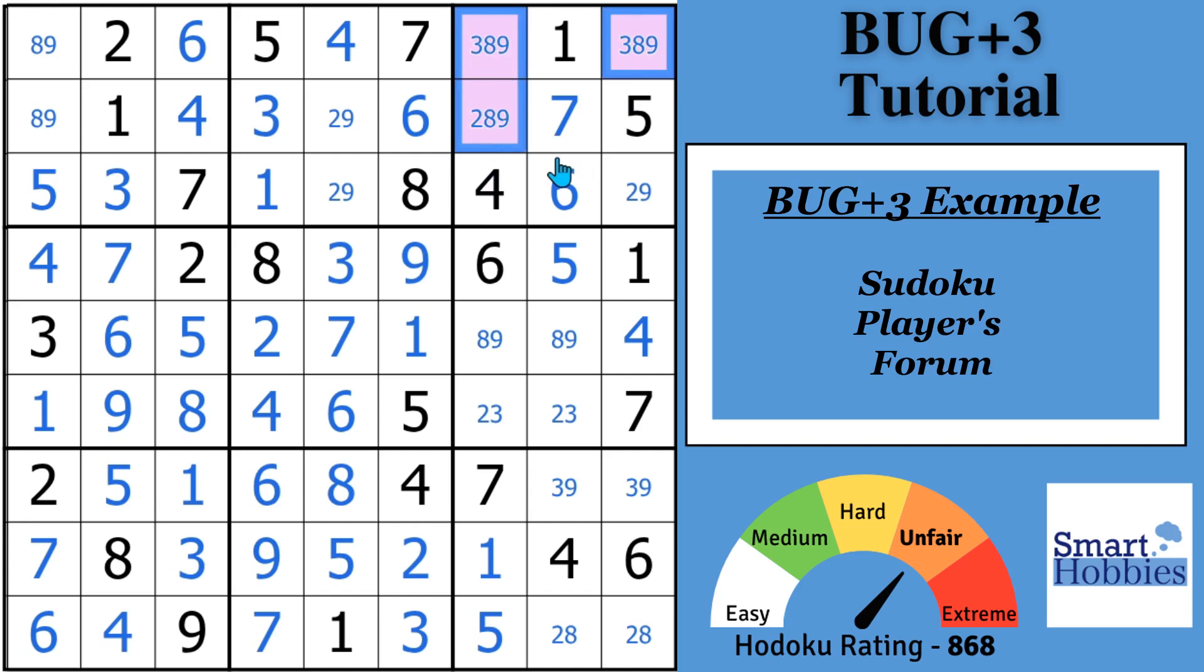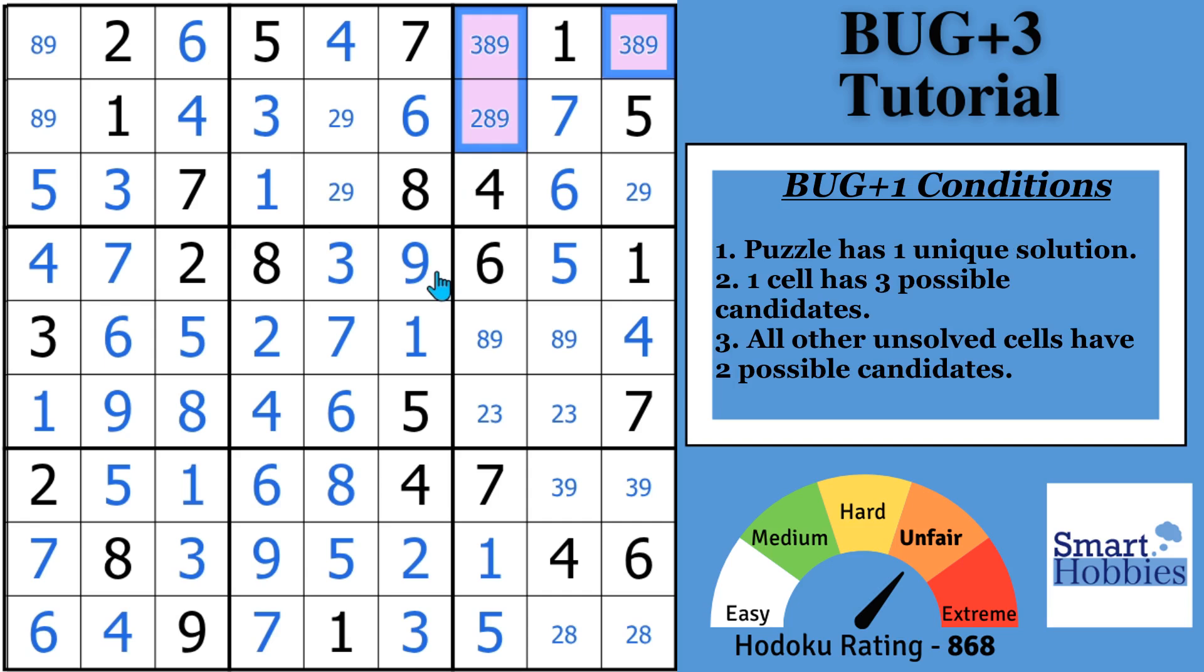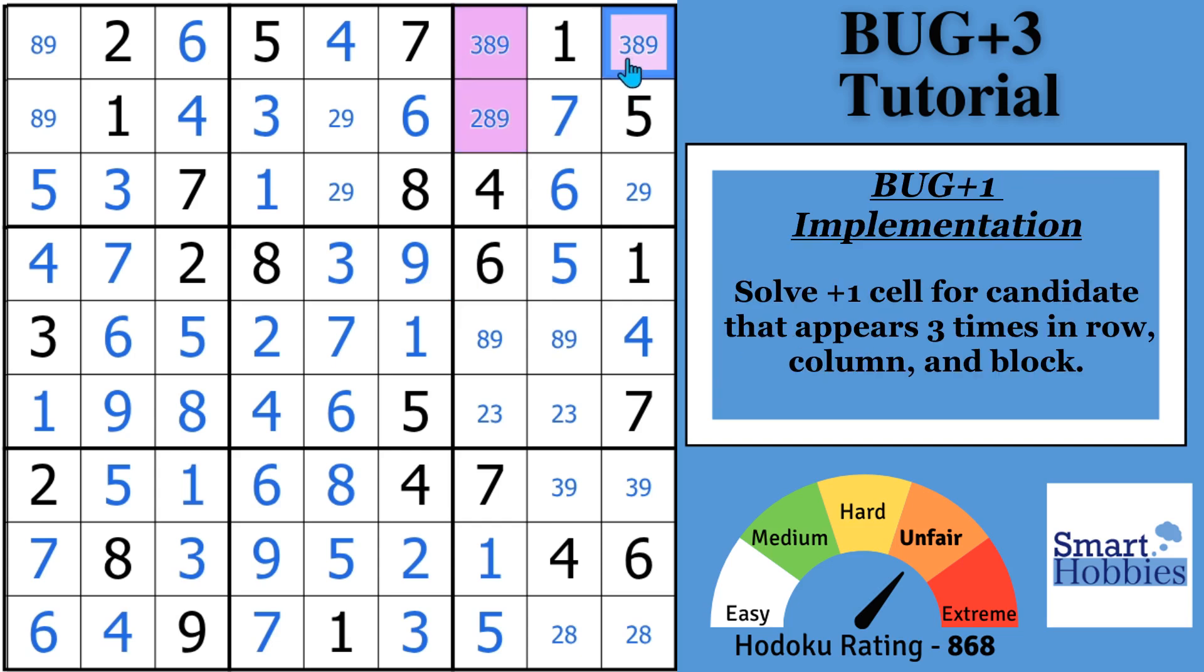In order to fully understand what I'm talking about, let's review the definition for a BUG+1. BUG stands for Bivalue Universal Grave. It's a technique that you can use to solve a puzzle that has almost all bivalue cells remaining as cells in candidates. First and foremost, the puzzle has to have a unique solution for this to work. You have to know the puzzle has a unique solution, because what you're trying to avoid is called a deadly trap. In this situation, you want to look at what candidate appears three times in the row, column, and block.